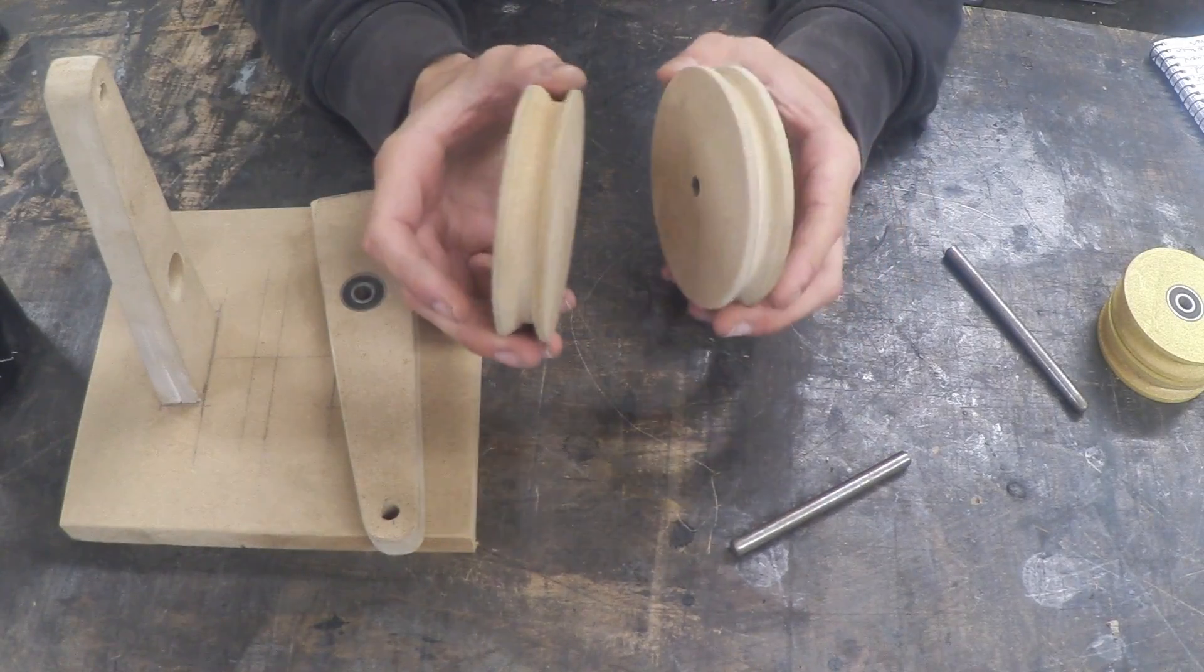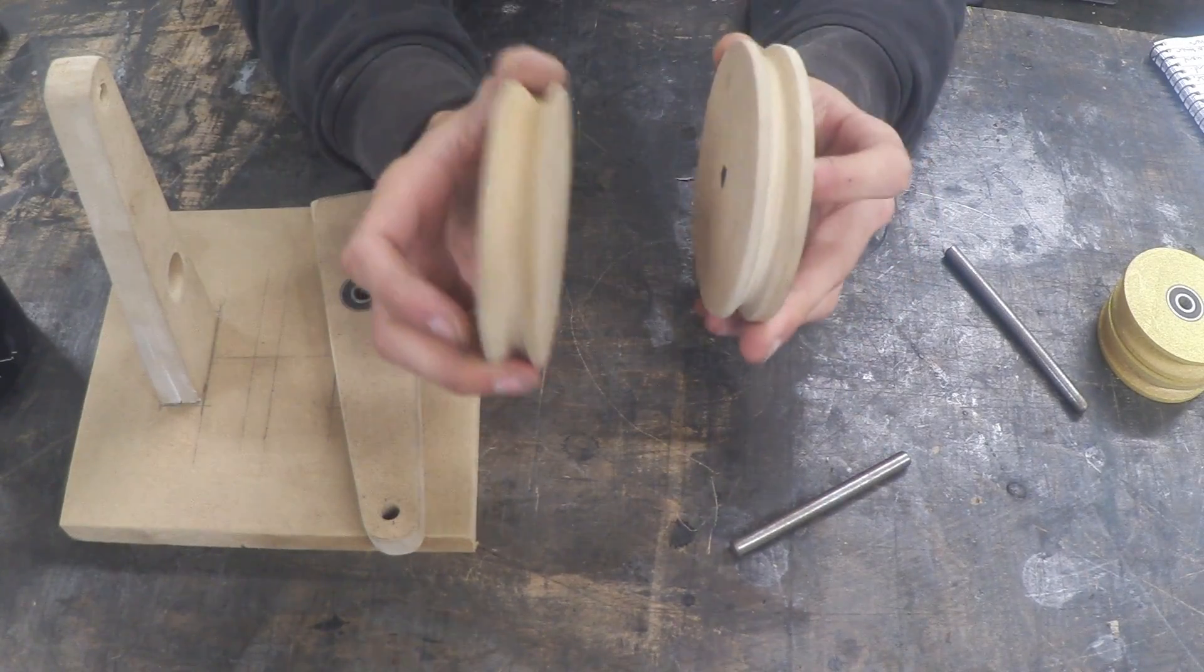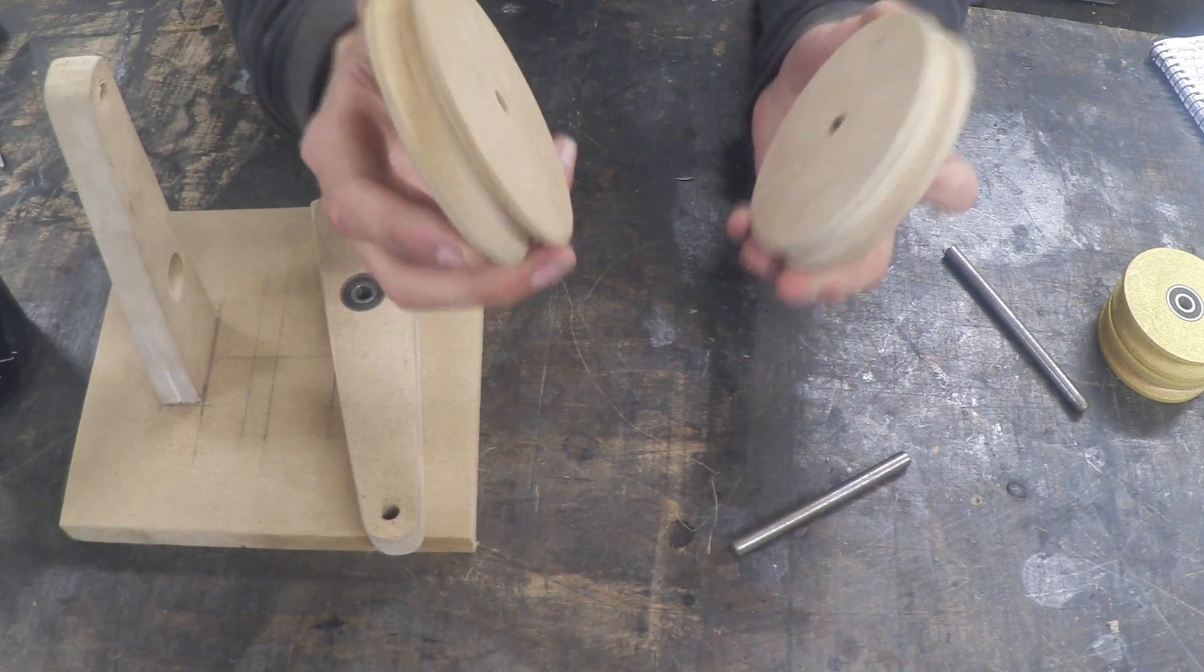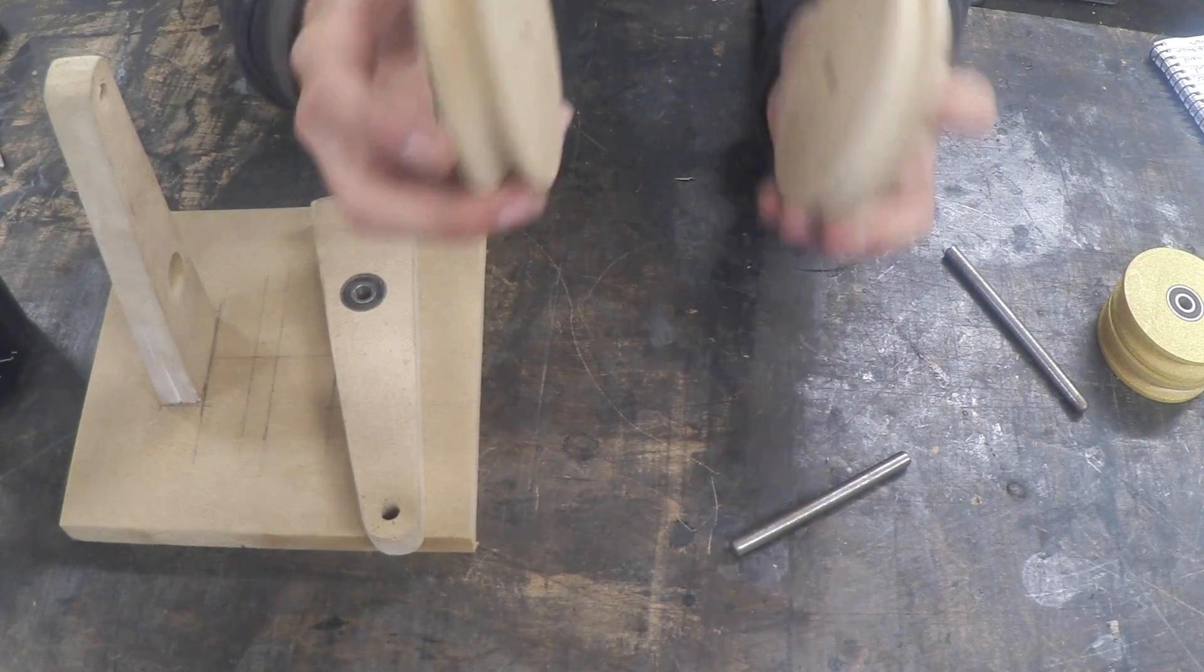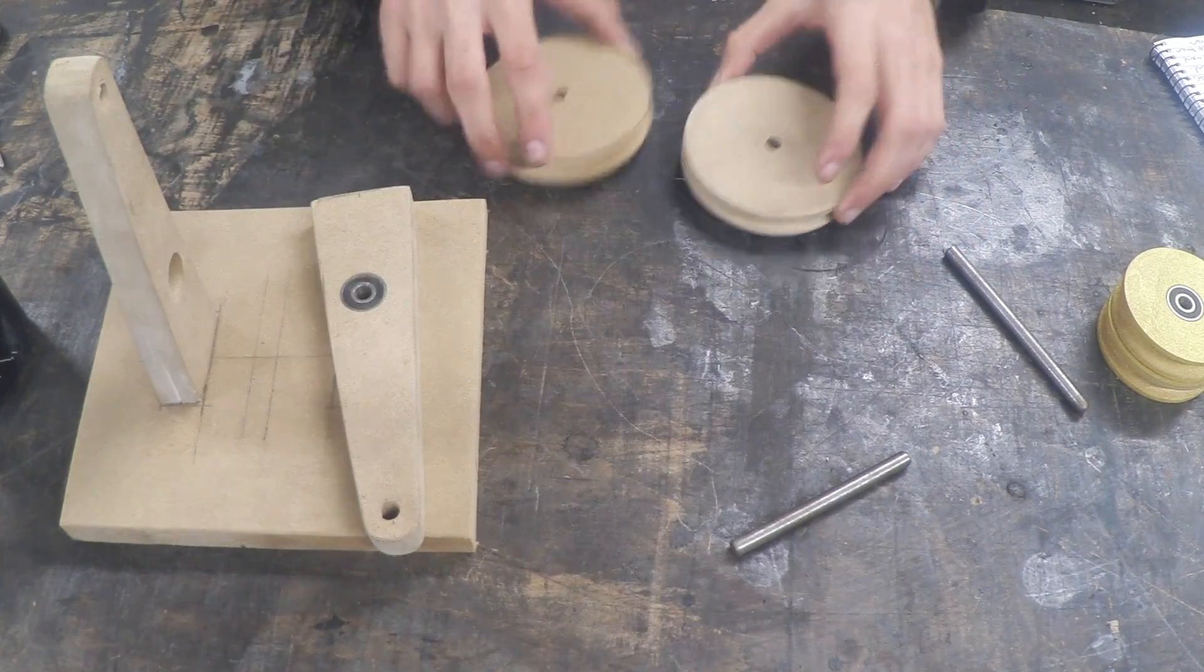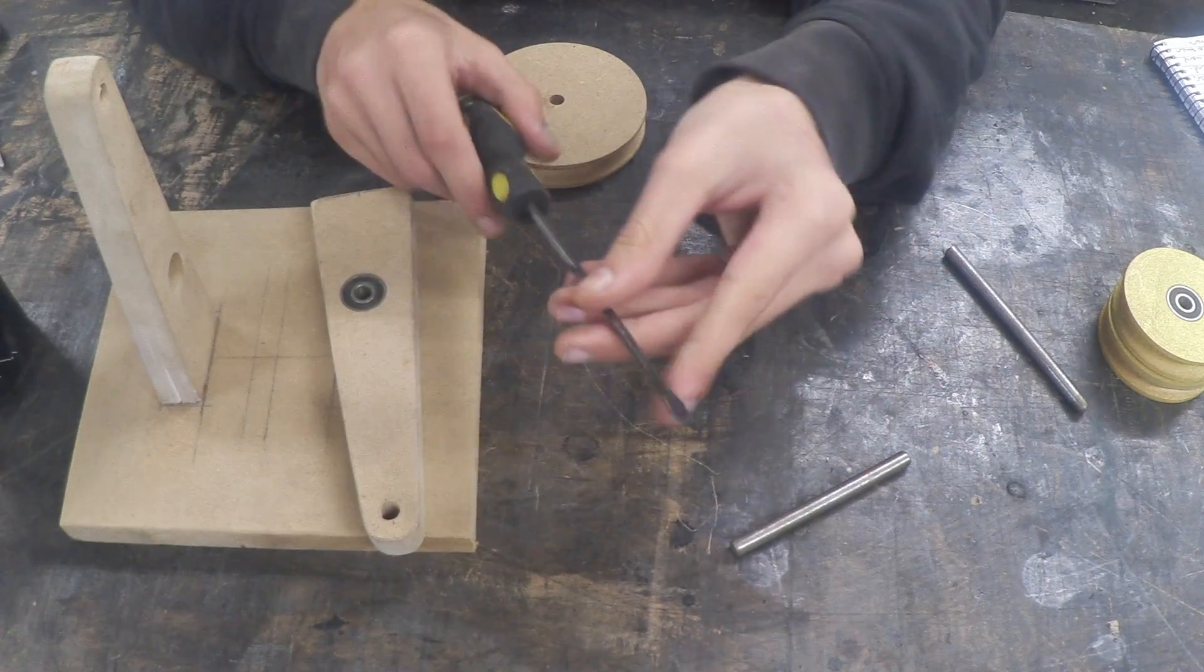So this is made from MDF. I cut this out using a hole saw and the pulley groove I cut out using a lathe. But you could use a drill if you wanted to, but you need some sort of cutting tool. But MDF is so soft just about anything would do. For example, this old screwdriver.